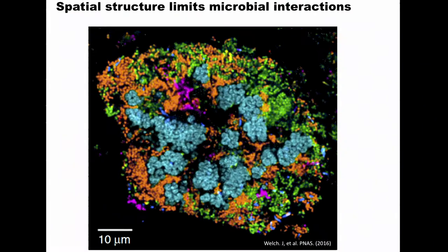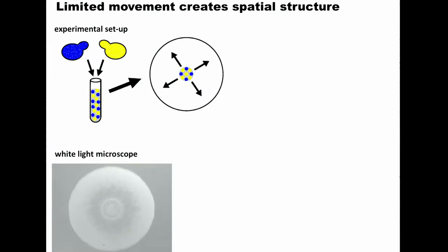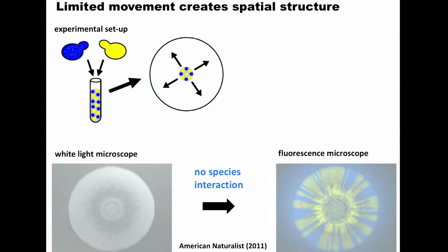My goal is to understand how this very simple process of limited dispersal affects microbial interaction. People study this in the laboratory by taking an organism and designing two strains - they could be interacting, but in the simple example they're identical except for a different fluorescent marker. You mix them together, put them in a petri dish, wait for a week, and have a nice colony. The colony looks uniform, but under the microscope you see a pattern of sectors where different strains tend to separate from each other.